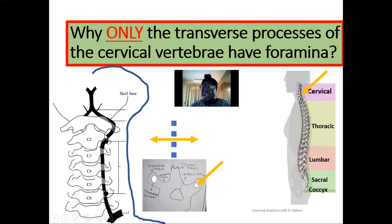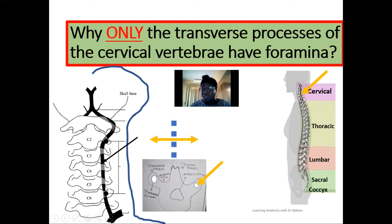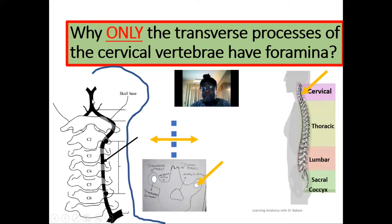The only way for the vertebral artery to enter the neurocranium is to pass through the holes created on the cervical vertebrae in the neck region. As it emerges, it passes through the holes on the transverse processes of the cervical vertebra and enters through the foramen magnum, which is the largest foramen in the skull. We have the right and left vertebral arteries, and as they pass through to enter the foramen magnum, they merge to become the basilar artery.